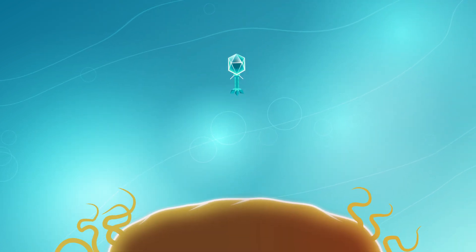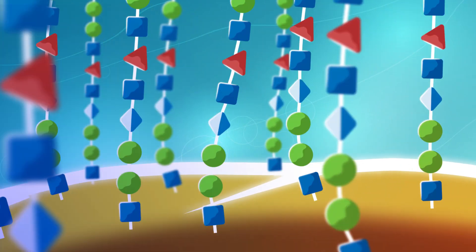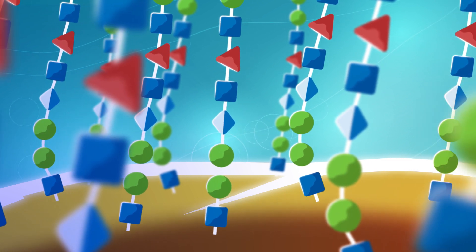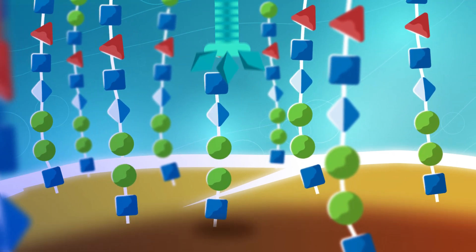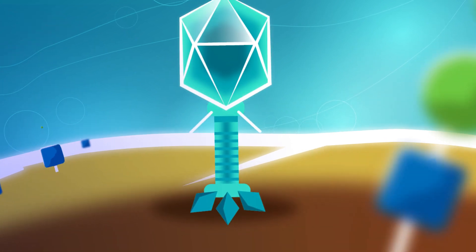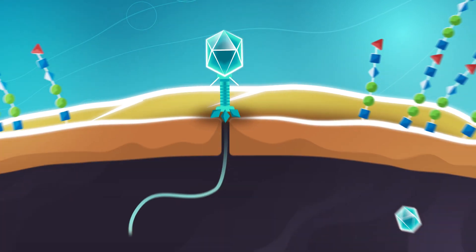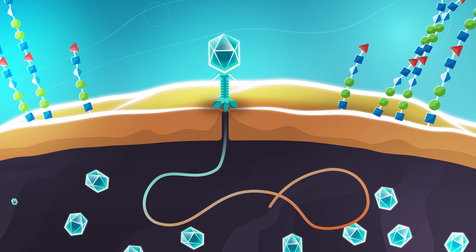The bacterial surface is covered by a complex sugar layer that allows for the binding of selected phages. Binding is facilitated by the tail spike proteins that degrade the sugar layer, so the phages can infect and kill the bacteria.